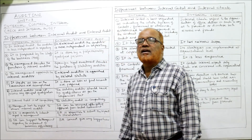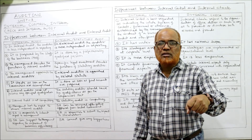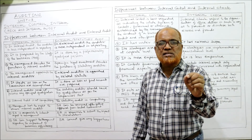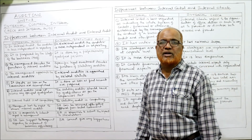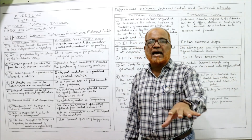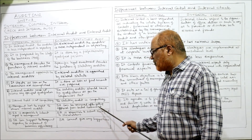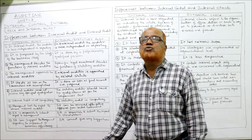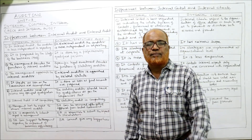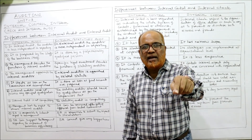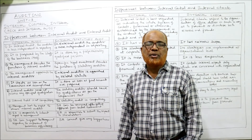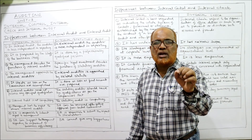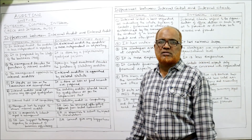Eighth difference: removal. Management has the right to appoint and remove the internal auditor. But the external auditor can be removed only after taking permission from the central government. Ninth difference: reporting. The internal auditor submits the audit report to the management, because internal audit is a service to the management. Whereas the external auditor — statutory auditor — has to give the report to the shareholders, not to the management.